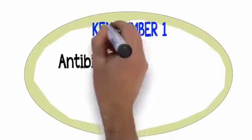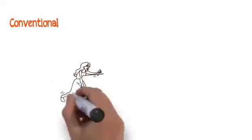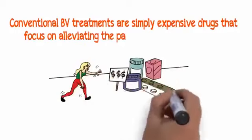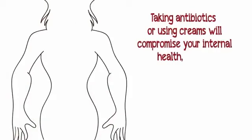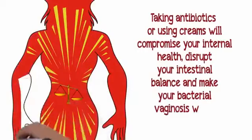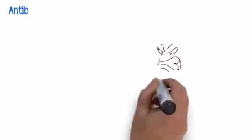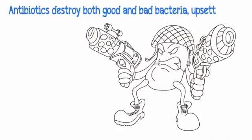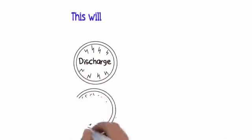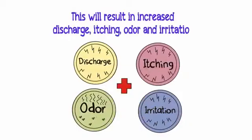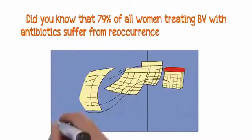I'm going to share with you four powerful keys to permanent freedom from BV. Key number one: Antibiotics and creams cannot prevent BV and will make your condition worse. Conventional BV treatments are simply expensive drugs that focus on alleviating the pain, itching, and discomfort. Taking antibiotics or using creams will compromise your internal health, disrupt your intestinal balance, and make your bacterial vaginosis worse in the long run. Antibiotics destroy both good and bad bacteria, upsetting the natural balance and leaving you defenseless. Did you know that 79% of all women treating BV with antibiotics suffer from reoccurrence within two to three months?